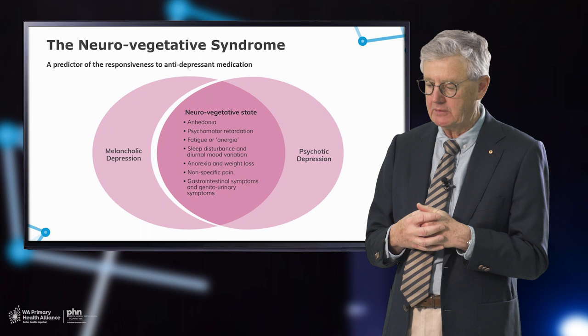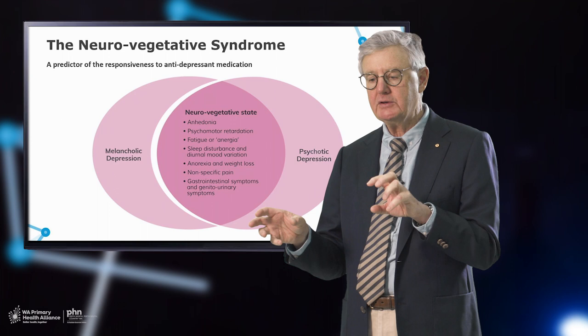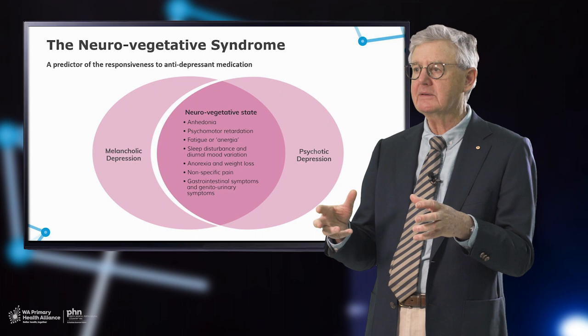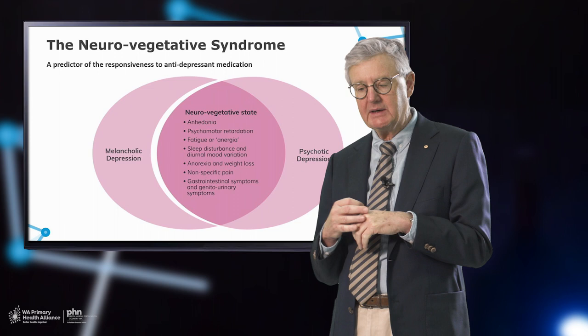Fatigue — sometimes called anergia — is very much a part of the neurovegetative syndrome, different to the slowness. Anhedonia, fatigue, and lack of motivation all contribute to someone not getting out of bed and having no purpose or reason to do so. Fatigue is highly sensitive as a symptom but not specific, and therefore not so useful diagnostically.